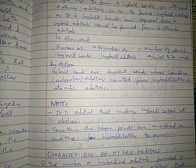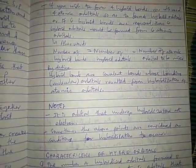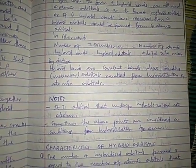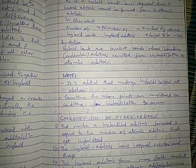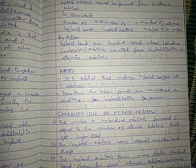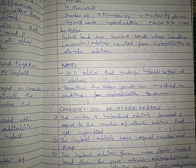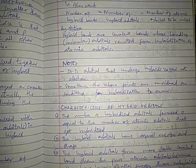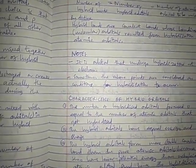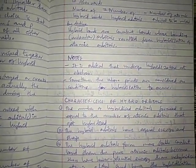By definition, hybrid bonds are covalent bonds with bonding molecular orbitals derived from hybridization of atomic orbitals. It is important to note that it is orbitals that undergo hybridization, not electrons. The five points discussed above are sometimes called the conditions for hybridization.